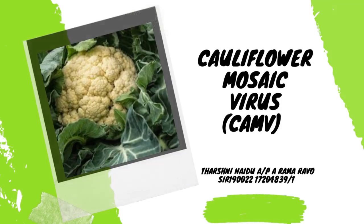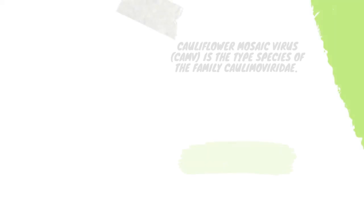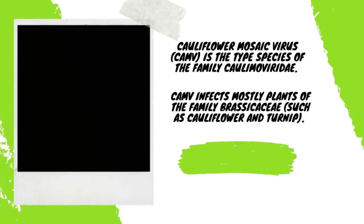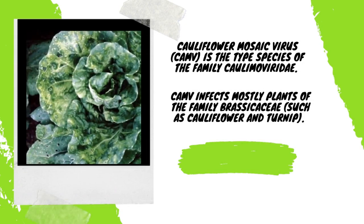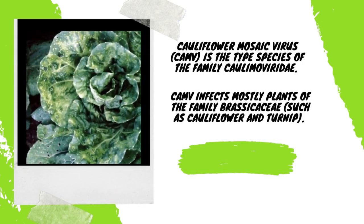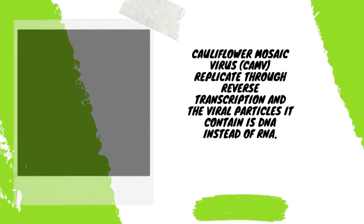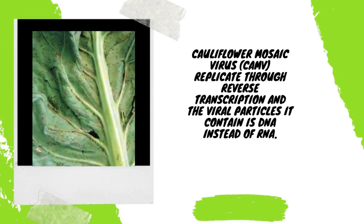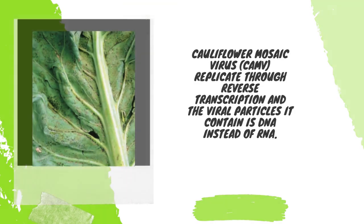Cauliflower Mosaic Virus is a member of genus Caulimovirus. CAMV infects mostly plants of the family Brassicaceae, such as cauliflower and turnip. The mode of replication of CAMV is reverse transcription, and it has viral particles containing DNA instead of RNA.